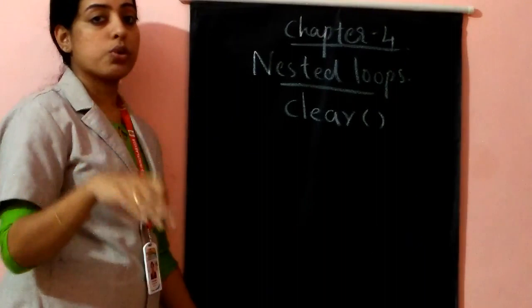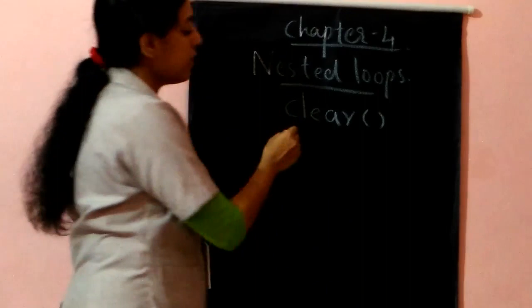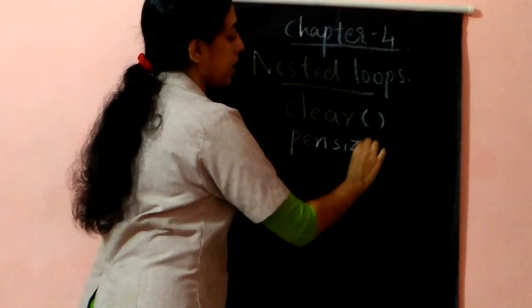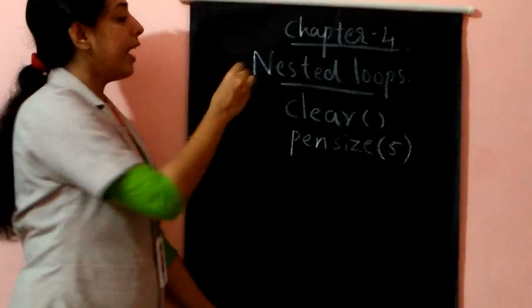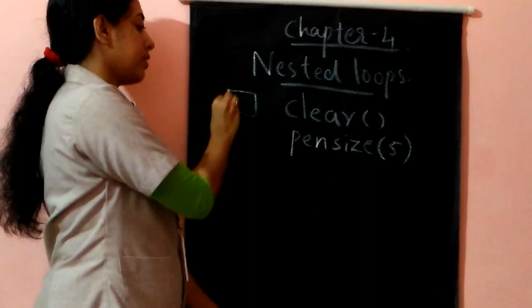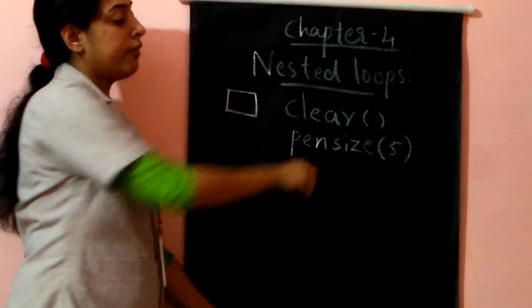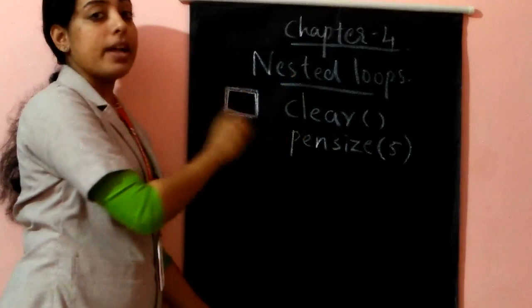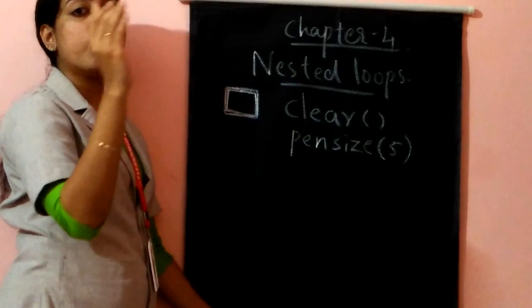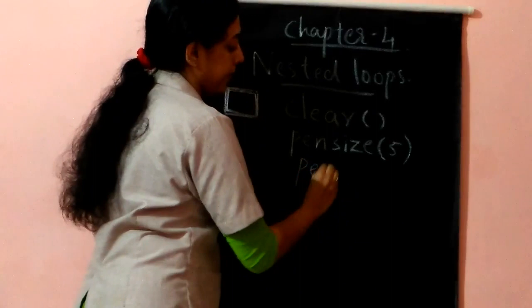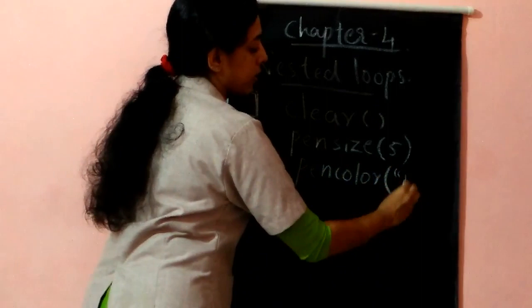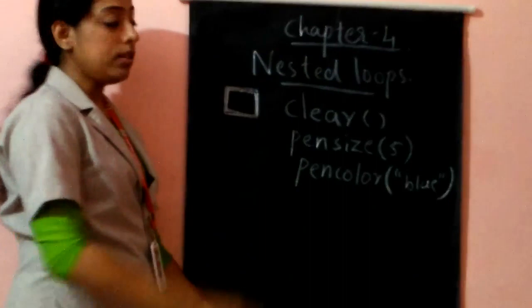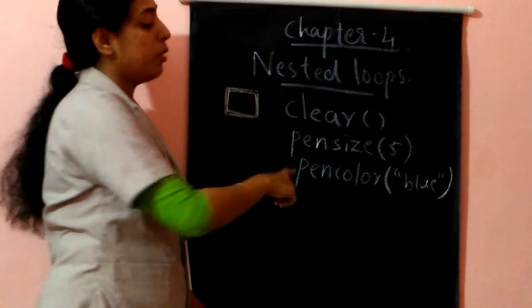These commands must be given before the for loop — after the 'from turtle import star' header initialization. One more command is pen color — written as 'pencolor()' with the color name in double quotes, such as blue, red, or yellow. This sets the line color. So these three commands — clear, pen size, and pen color — are additional graphical commands used in this program.